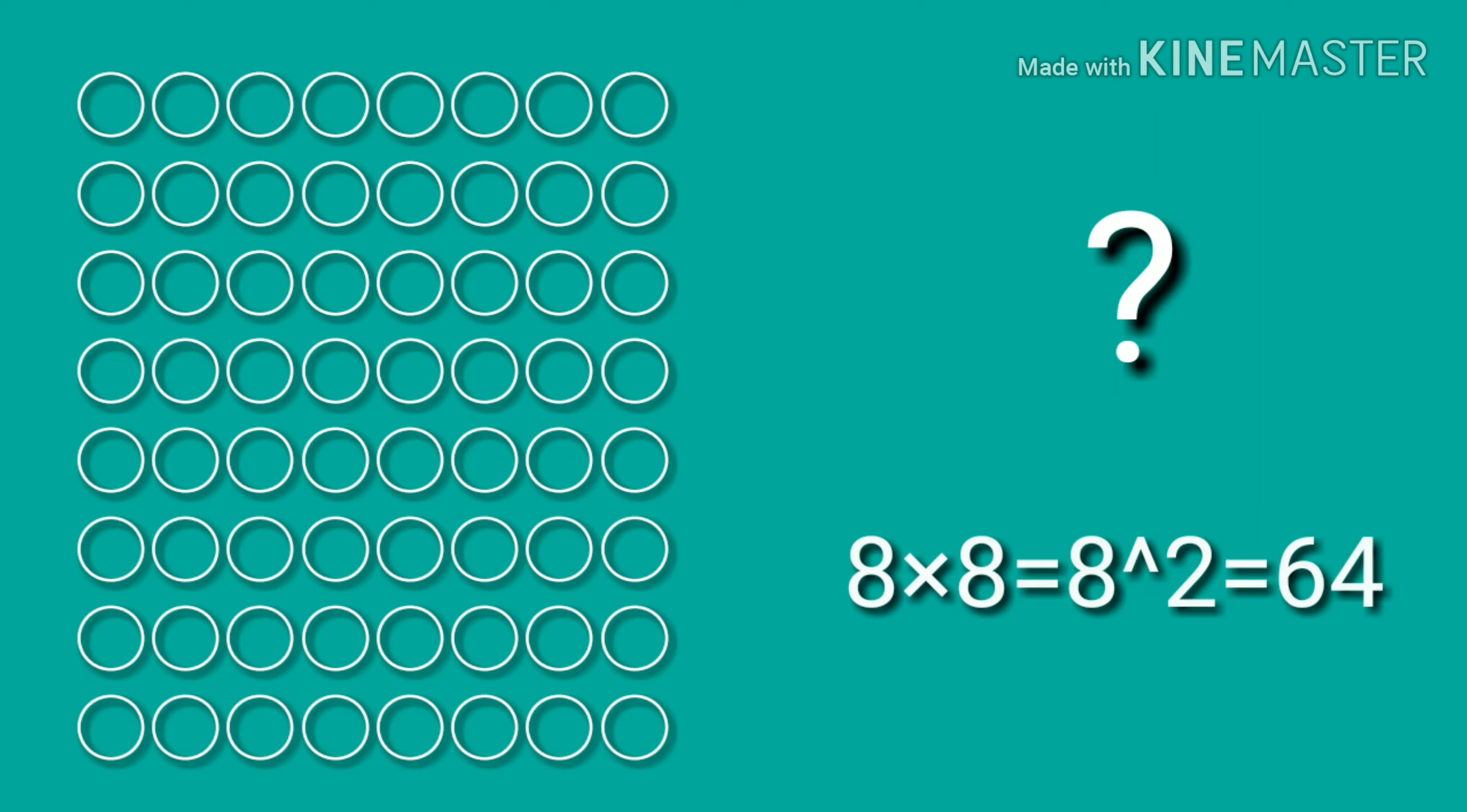Can you find the answer for this? 8 into 8 is equal to 8 power 2, which equals 64.